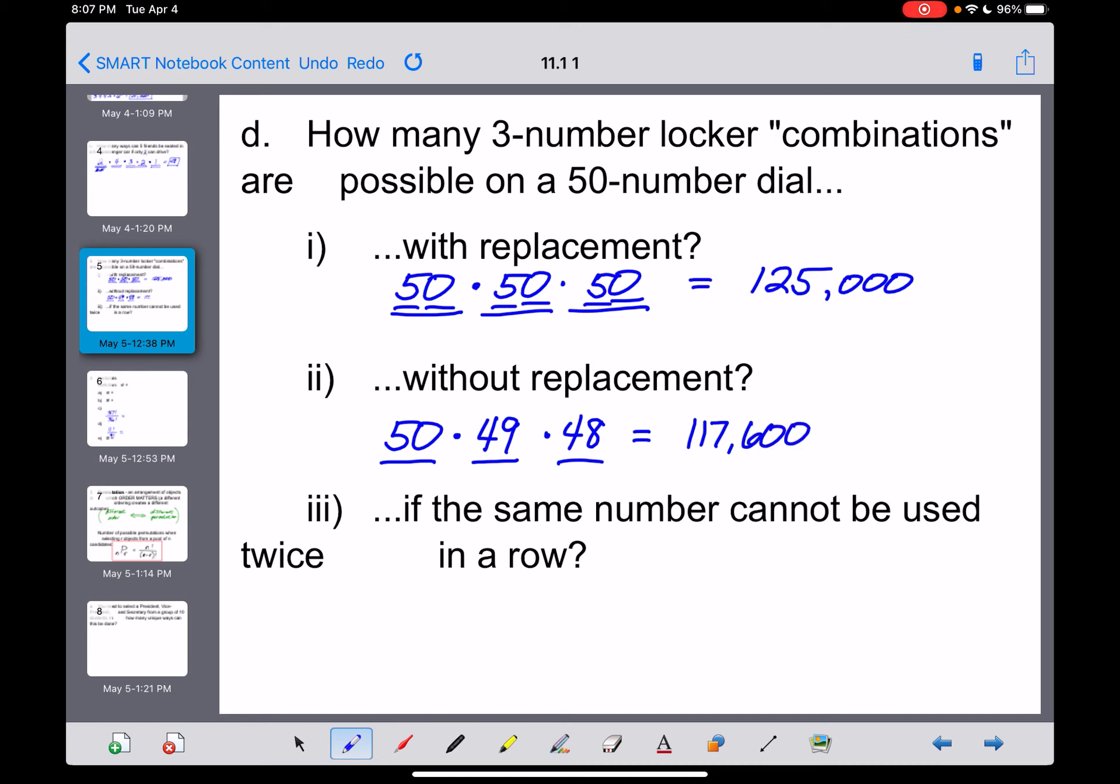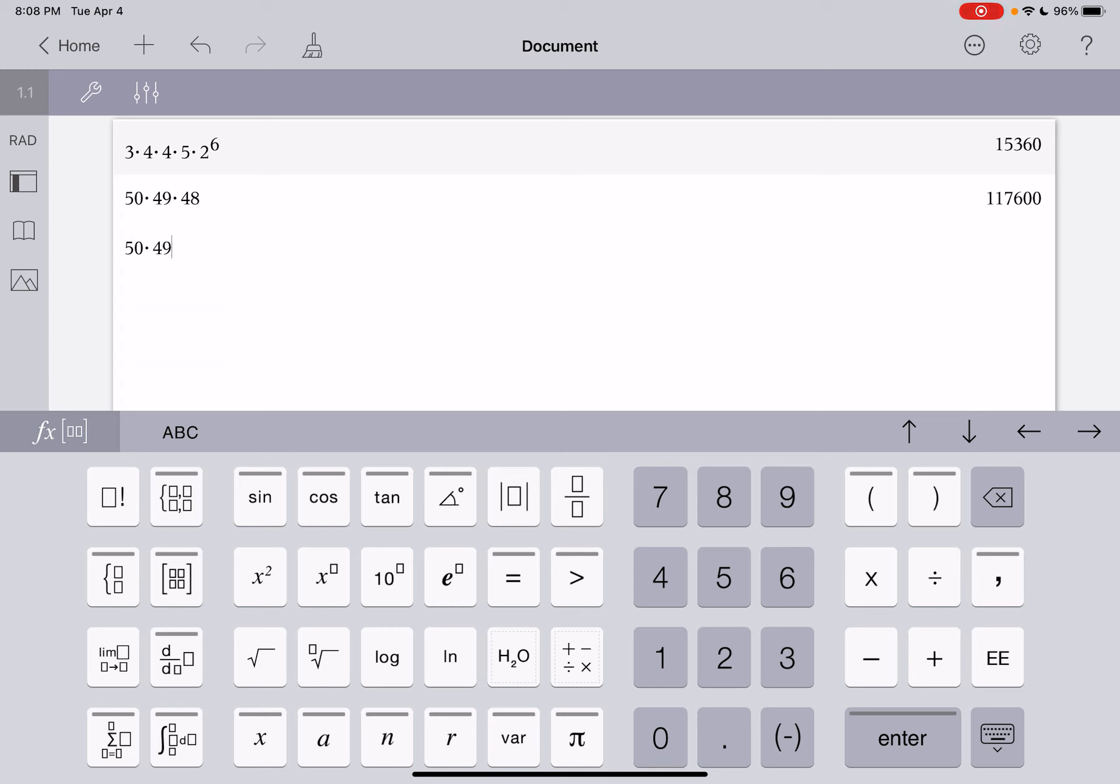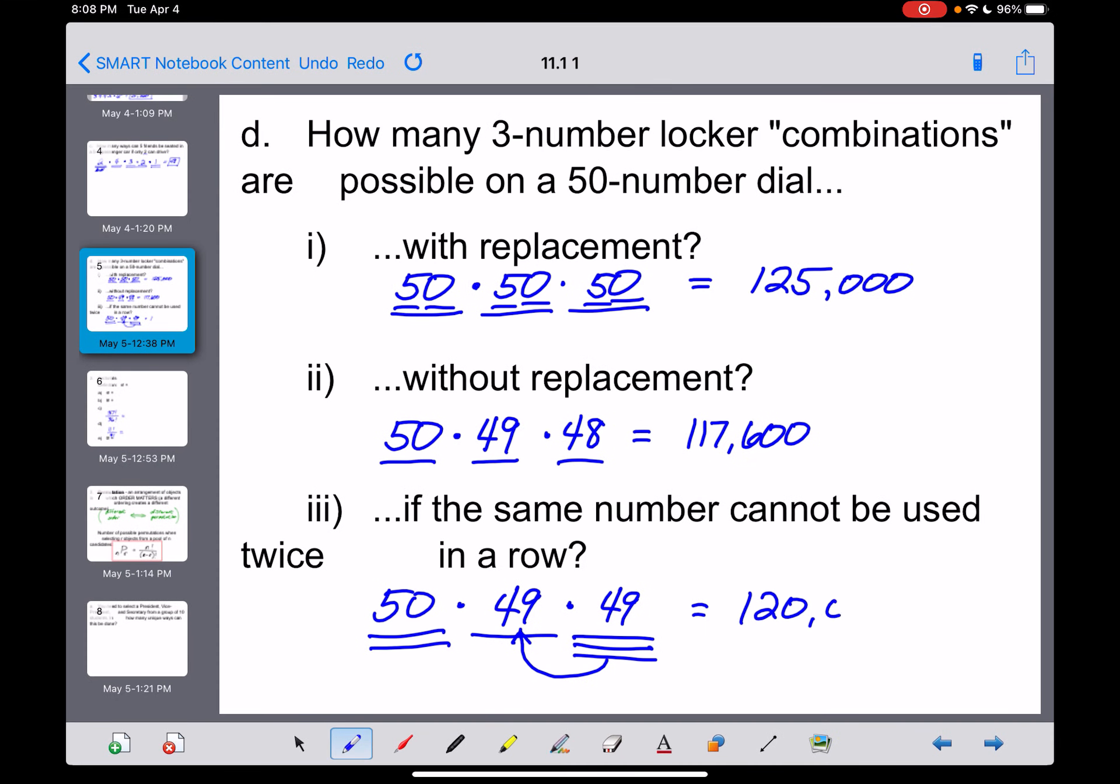Alright, and then the third one I just threw in for fun right here, what if the same number cannot be used twice in a row? So once more, we've got three numbers to choose. You've got 50 here for the first one. For the second number, you can't use the number that you just used. You can't use two in a row here, so that would be a 49. But for the third number now, this number could be any number other than this one right here. But it is okay if that third number is equal to the first one. That gives us a 49 yet again there, guys. So let's multiply that one out. 50 times 49, really there were two 49s, so I'll just square that one. And that's somewhere in between. 120,050. So those are kind of three variations on a very similar problem right there, each one with slightly different rules for what it is that you're able to do or not do when choosing your locker combination.